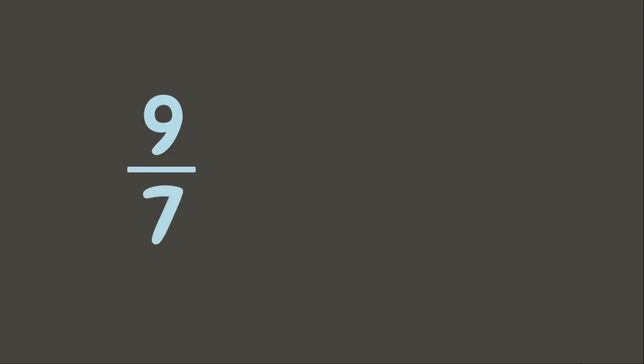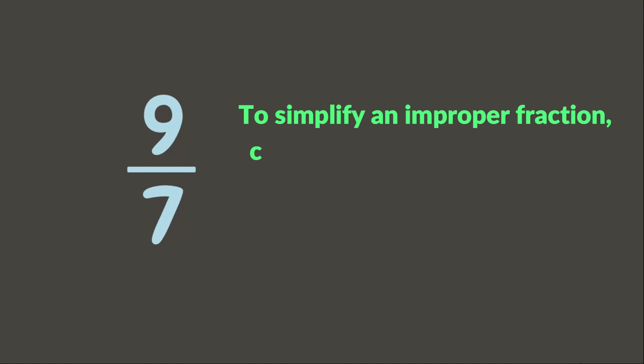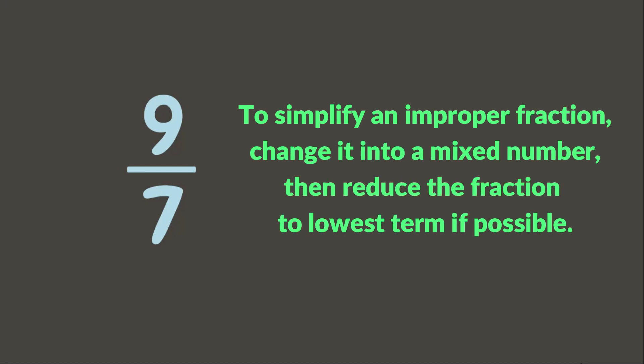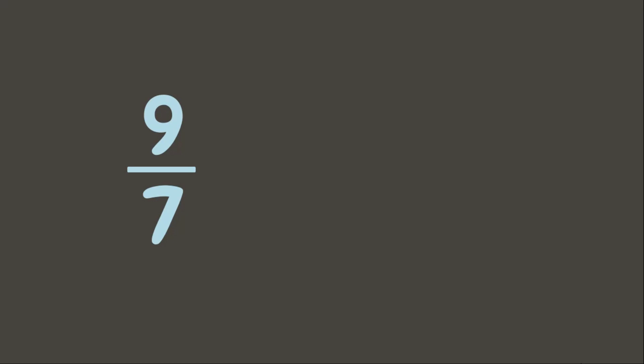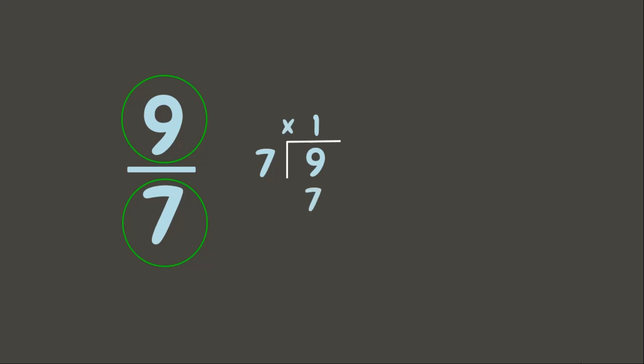Now, how are we going to simplify nine-sevenths? This is an improper fraction. To simplify an improper fraction, we are going to convert it into a mixed number by dividing the numerator by the denominator. Nine divided by seven is one; one times seven is seven; nine minus seven is two. Therefore, the mixed number of nine-sevenths is one and two-sevenths. This is now the simplest form of nine-sevenths.